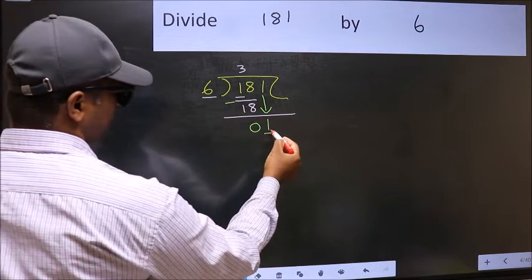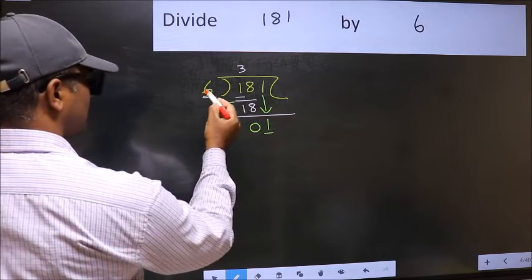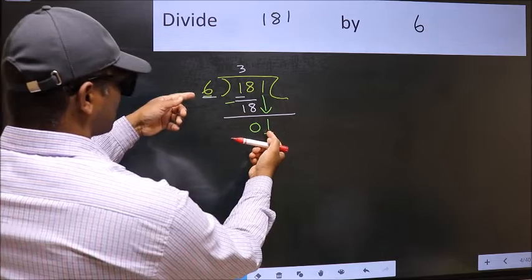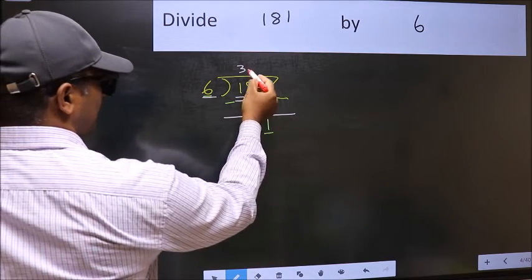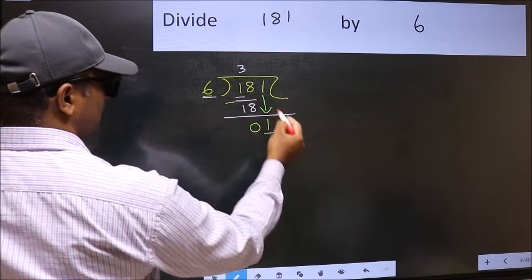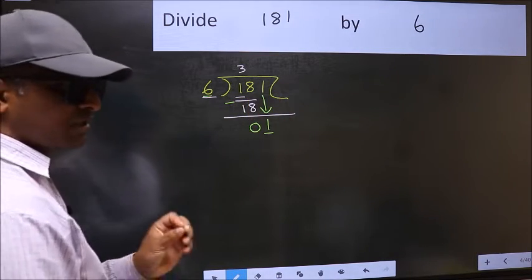Here we have 1, and here 6. 1 is smaller than 6. So what many do is, they directly put dot and take 0. Which is wrong.